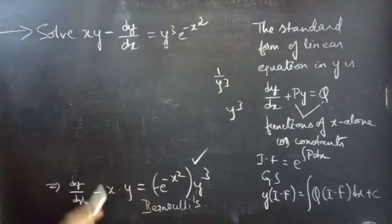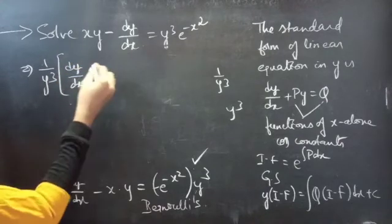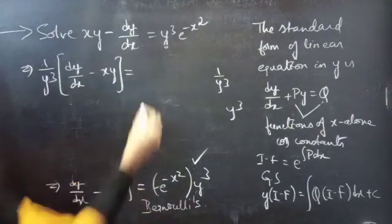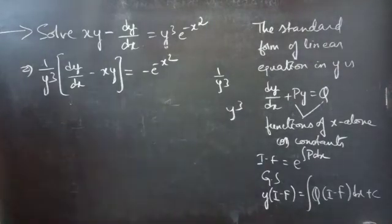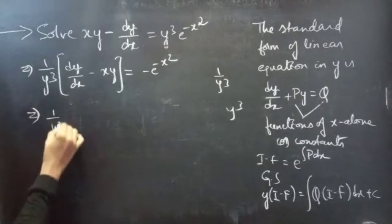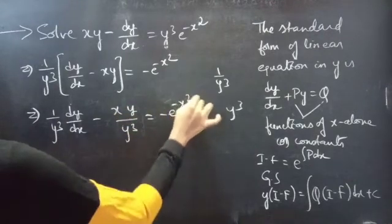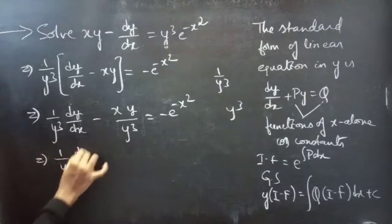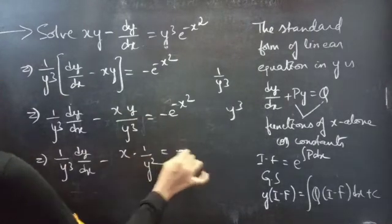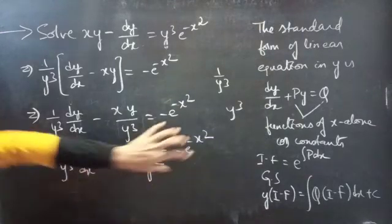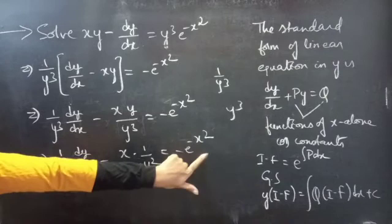Carrying y³ to the LHS, we get (1/y³)·(dy/dx) minus x·(1/y²) equals minus e^(−x²). Here, (1/y³)·(dy/dx) minus x·(1/y²) equals minus e^(−x²). So y³ is eliminated from the RHS — that is, the function of y is eliminated from the RHS.